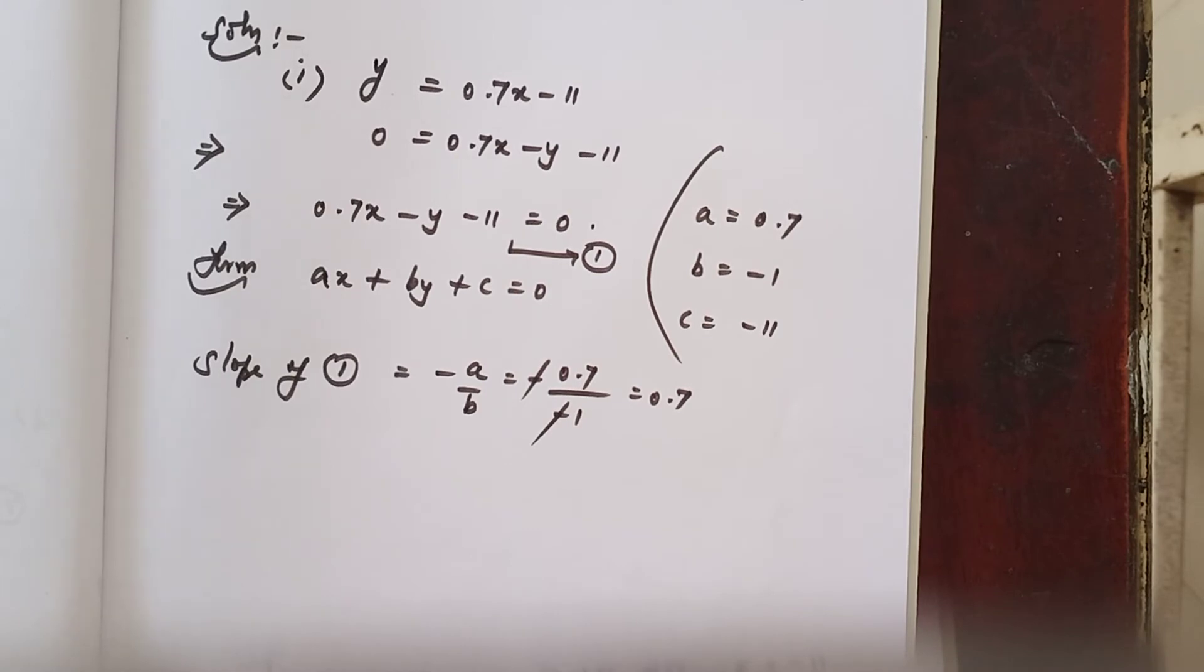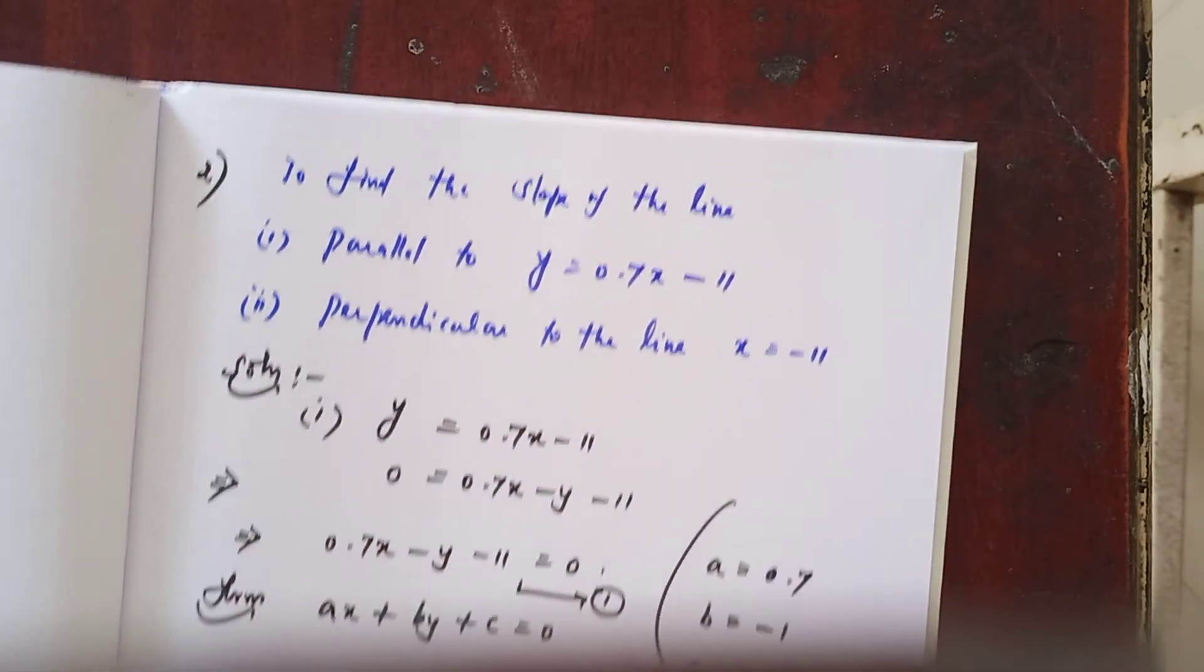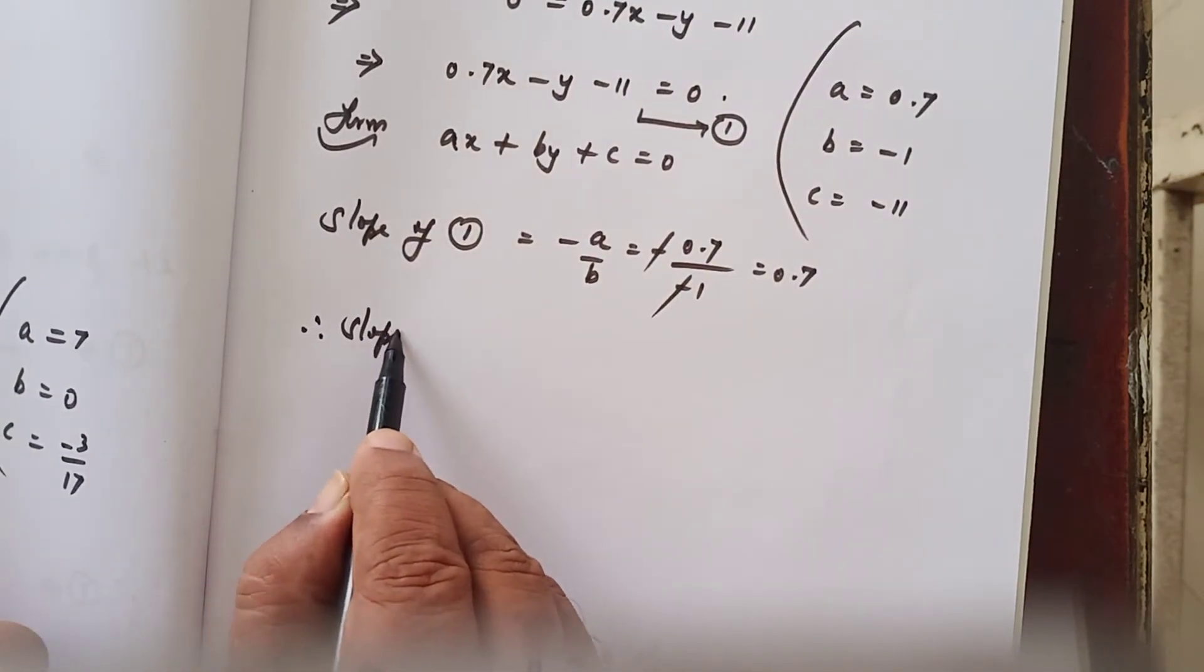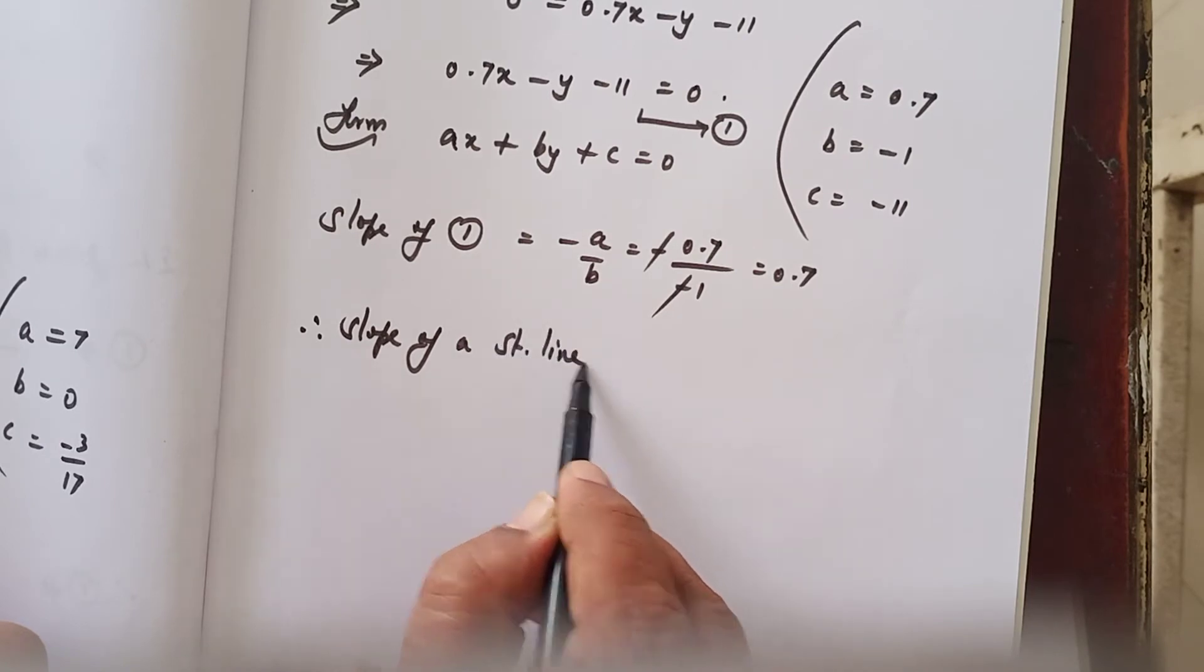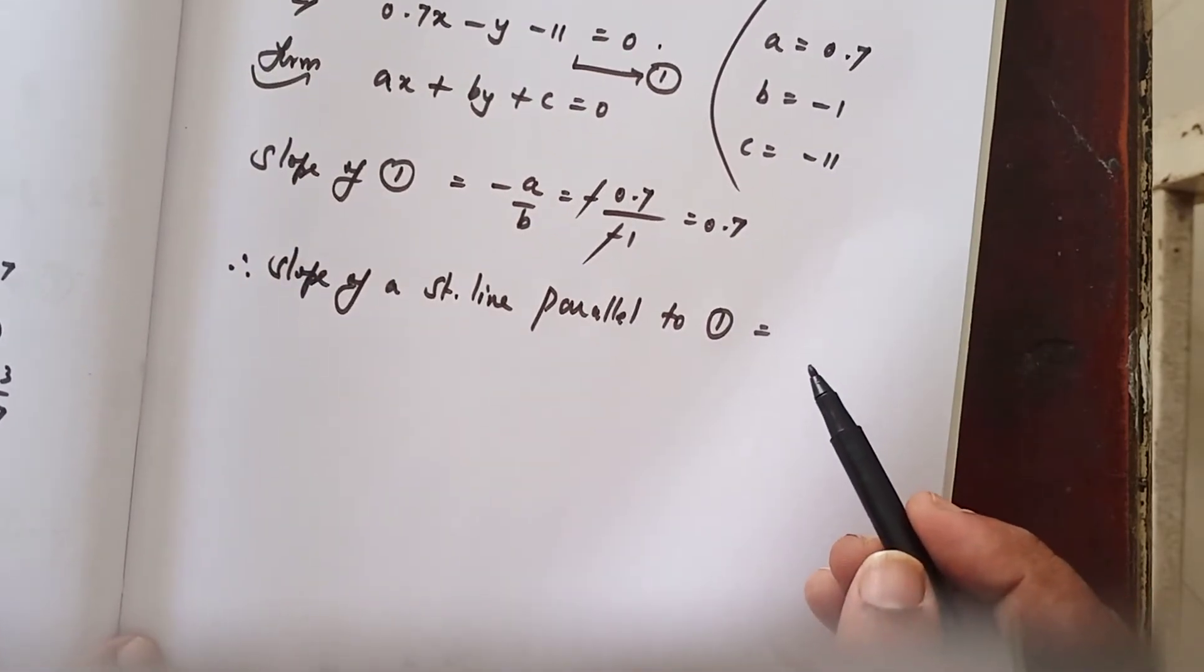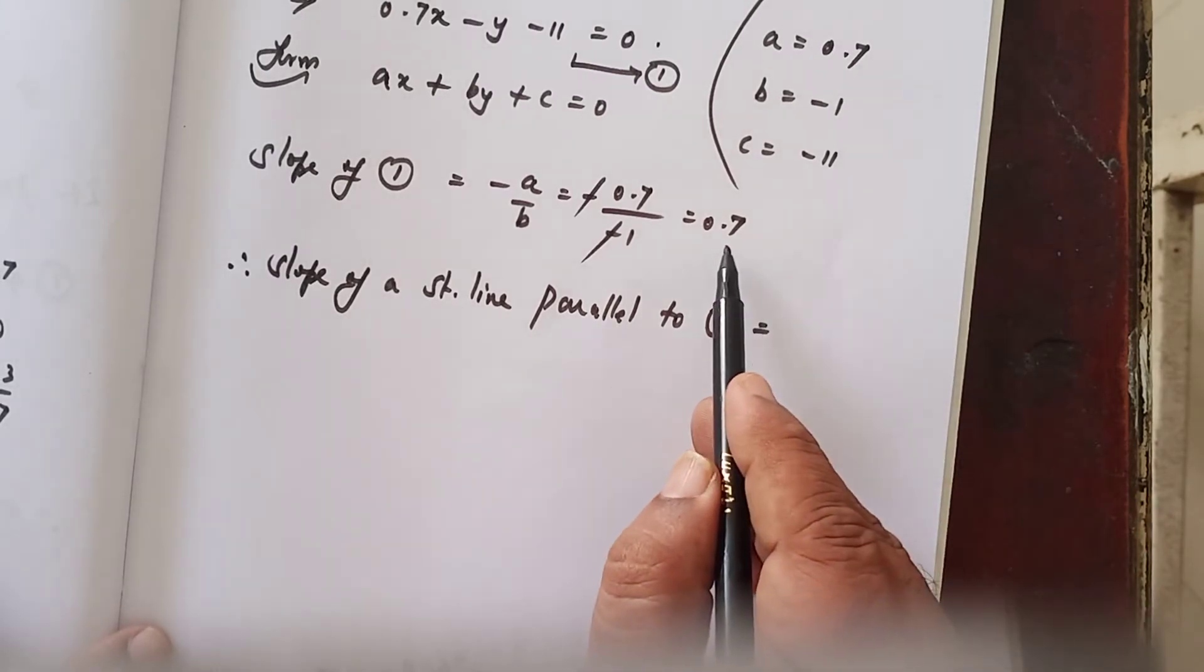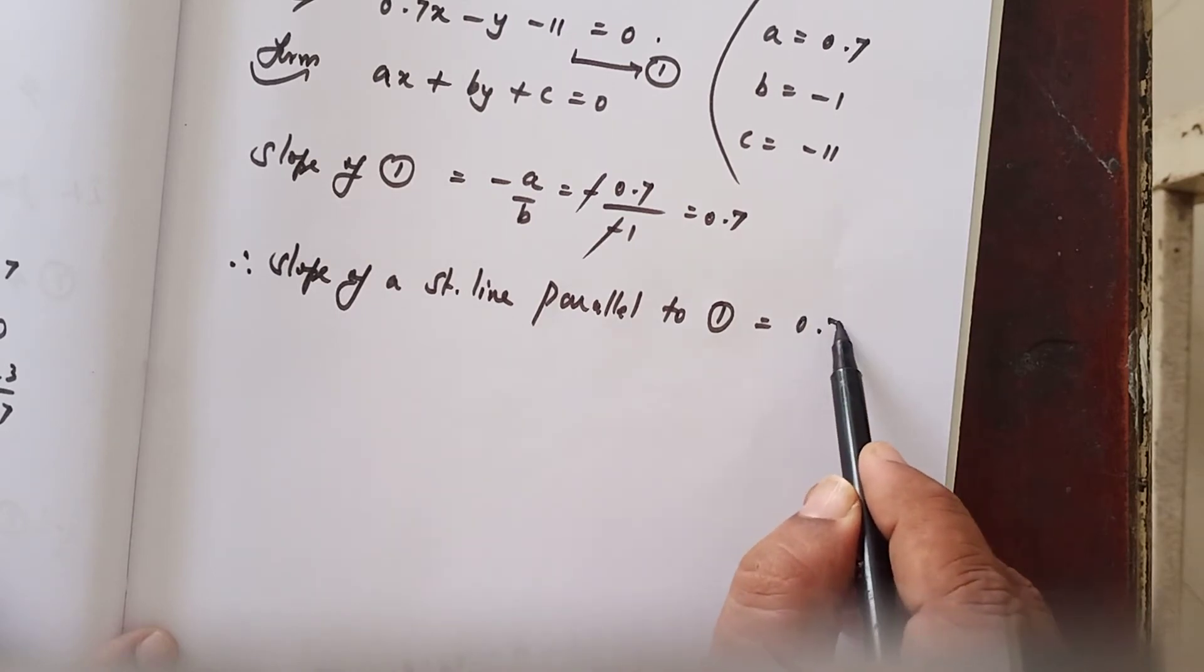You are asked to find out the slope of the line parallel to this line. Therefore, slope of a straight line parallel to the given equation 1 equals - you know very well, if the two lines are parallel, slopes are equal. The given line slope is 0.7. Therefore, the parallel line slope also 0.7.